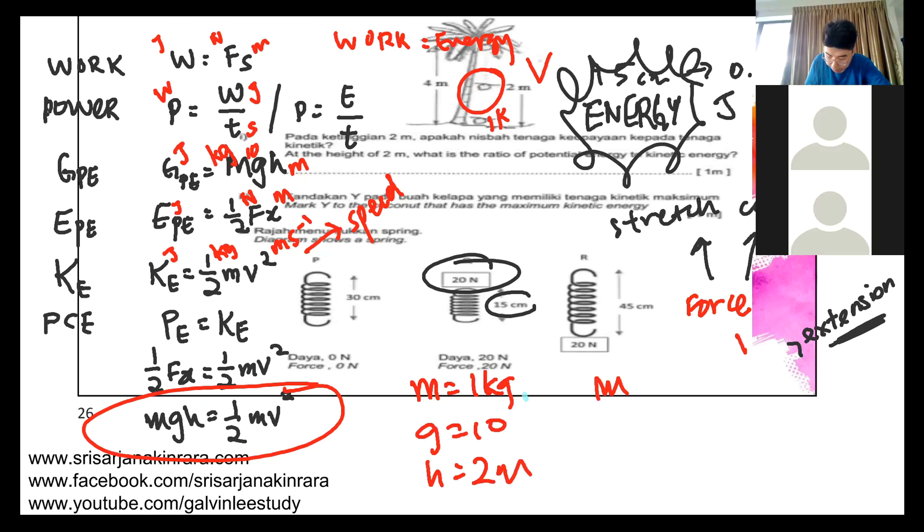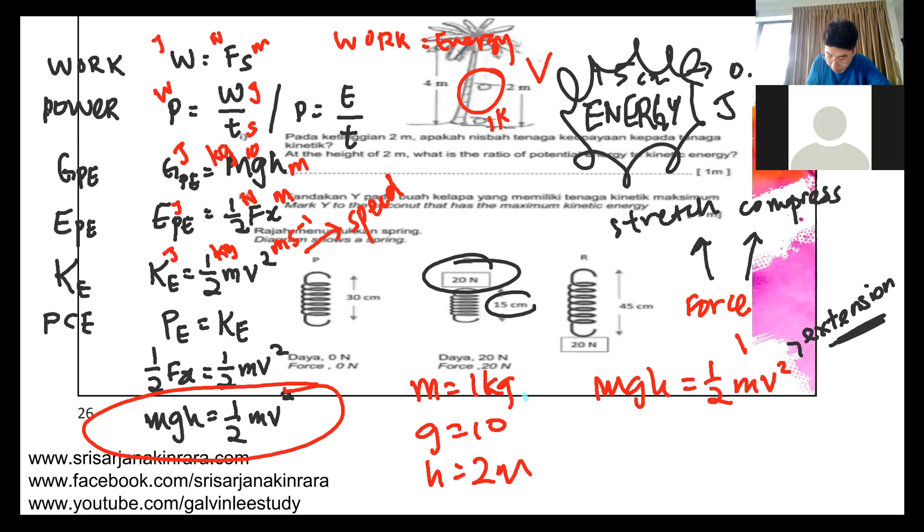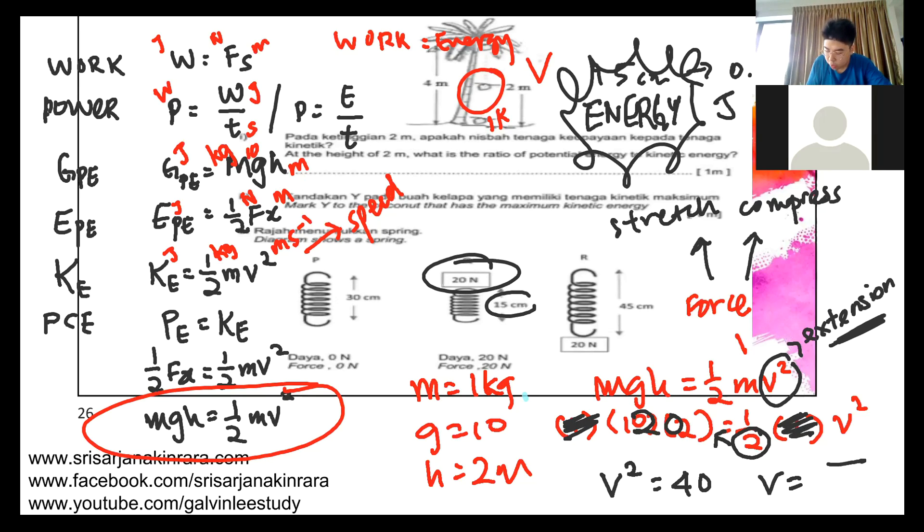What do you do? mgh equals half mv squared. You want to find the v. Substitute everything that you know: 1 kg times 10 times h equals 2, equals half times m is 1 times v squared. Move everything to the other side. Bring the half up, it becomes multiply 2. The 1s forget about them. So here you got 20 times 2 is 40. v squared equals 40. v equals square root of 40.